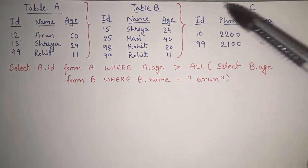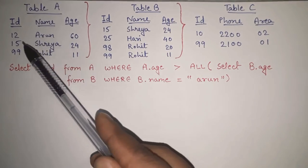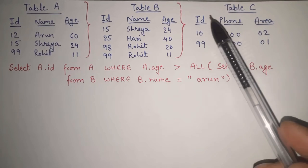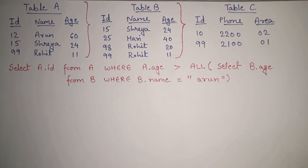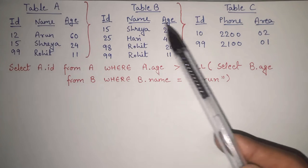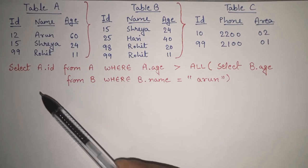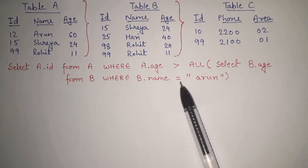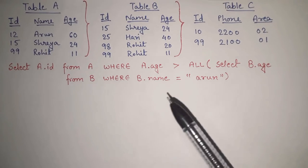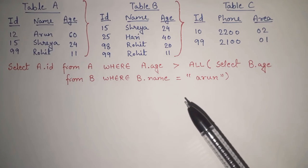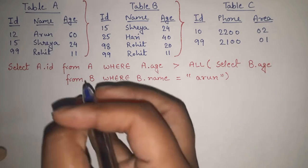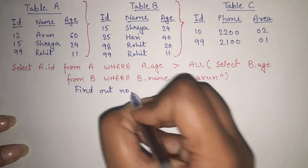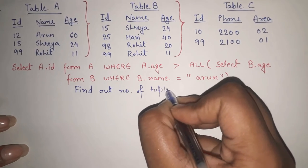In this example we are given three tables: table A, table B and table C. Table A and B have columns ID, name and age. Table C has columns ID, phone and area. The SQL query given is: SELECT A.ID FROM A WHERE A.age > ALL (SELECT B.age FROM B WHERE B.name = 'Arun'). The actual question asks us to find out the number of tuples in the output.